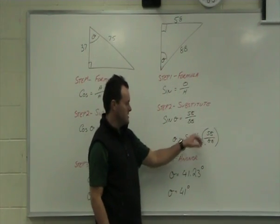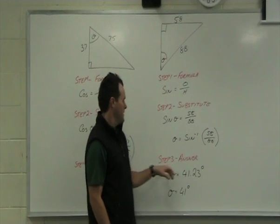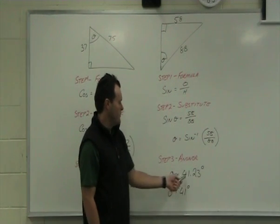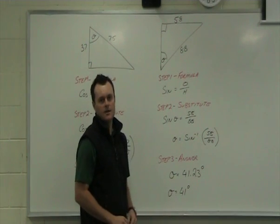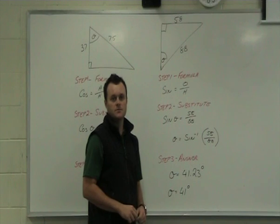Doing the second function again, second function sine, gives us our step three answer of 41.23 degrees, which you're going to round down to equal 41. So, if you've got that one, give yourself a tick as well.